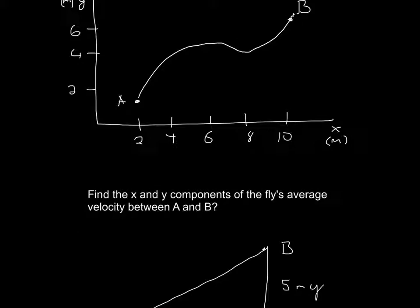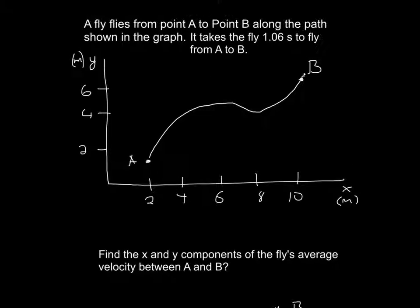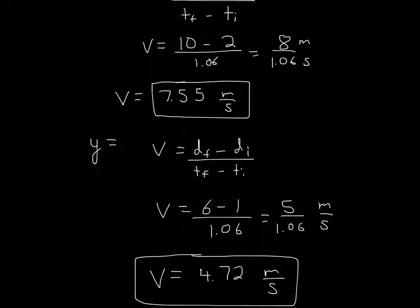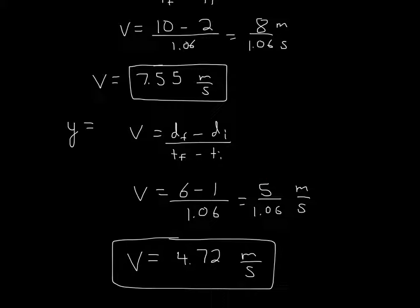So it's going to be 6 minus 1. This is supposed to be at 1. So 6 minus 1, and then the time is 1.06 seconds right there. So that's all the information we need. We get 5 over 1.06.